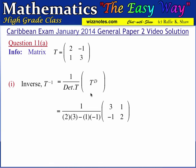The adjoint matrix is formed by interchanging the elements on the leading diagonal and changing the sign of the elements on the trailing diagonal. So we interchange 2 and 3 to get 3 and 2, then change the sign of the trailing elements to get 1 and negative 1. The determinant equals 2 times 3 is 6, and negative 1 times negative 1 is positive 1, so the determinant of T works out to 6 plus 1, which is 7.